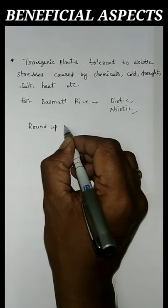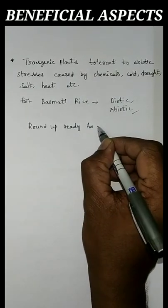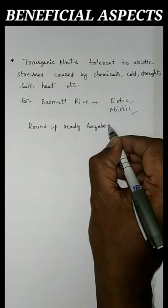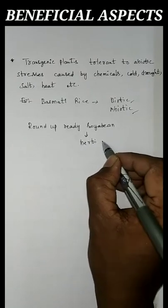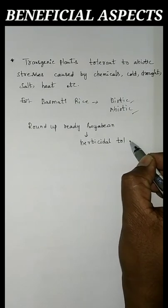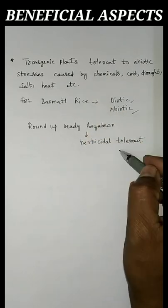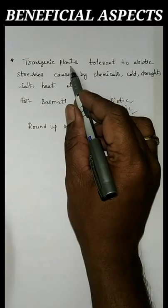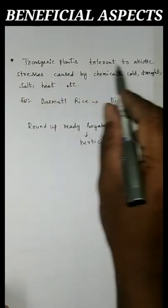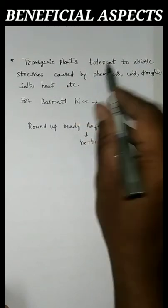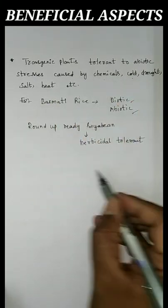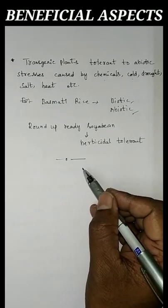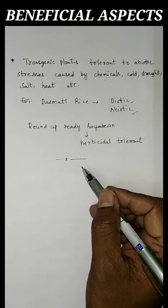The second example is Roundup Ready soybean. This Roundup Ready soybean is herbicide tolerant, meaning it has resistance against herbicides. These are the two examples of transgenic plants tolerant to abiotic stress caused by chemicals, cold, drought, salt, heat, etc. These are the different beneficial aspects regarding transgenic plants.